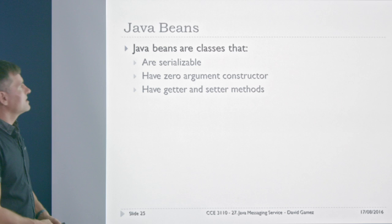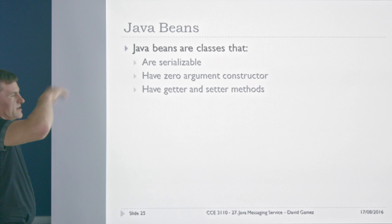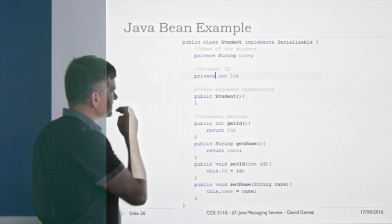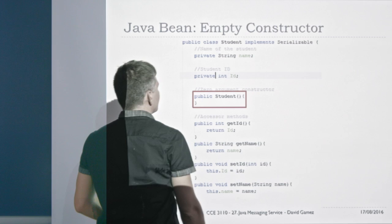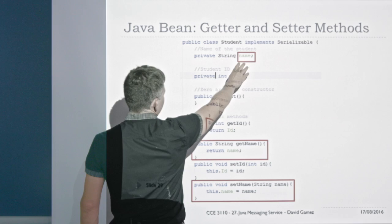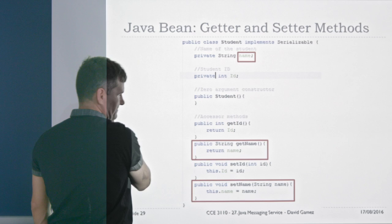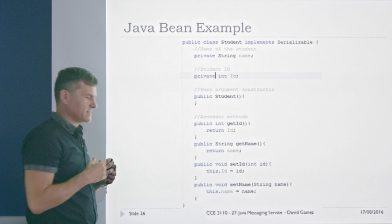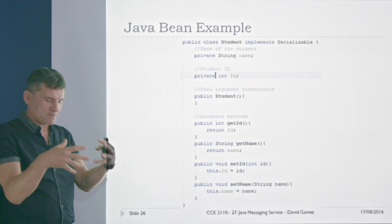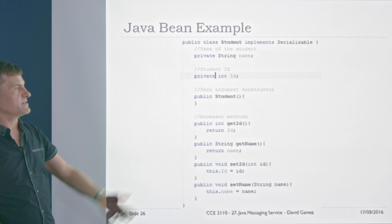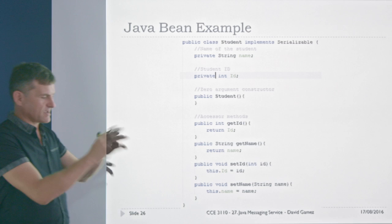Java Beans are classes that are serializable — meaning they can be sent over a network or written to a file. They have a zero-argument constructor and getter and setter methods — those are the three features. Here's an example of a Java Bean: it implements Serializable, has a zero-argument constructor, and for each variable has a getter and setter. Any other bit of code can interact with this bean and set or get the name or ID.